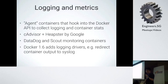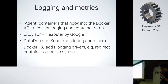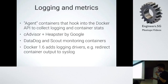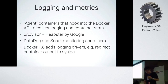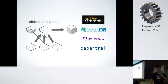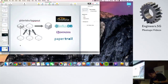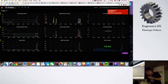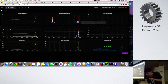Just now you saw all the logs coming through our Paper Trail — that's how we do our logging setup. For logging and metrics, you can have sidecar containers that hook into the Docker API to collect all the stats and outputs. There are a few projects that facilitate this, for example cAdvisor and Weave by Google, or you can also use Datadog and Scout monitoring containers. Also, the newer versions of Docker from 1.6 onwards add logging drivers that let you redirect container output to, for example, Syslog. We also have a metrics setup where we send metrics from our containers into an InfluxDB database, and then we use Grafana to create graphs. We can see that deployments are shown on the dashboard.